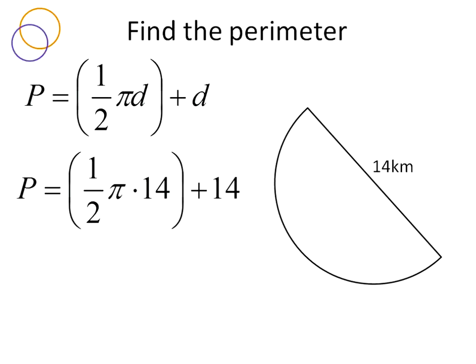The diameter is 14, so we're going to substitute that in everywhere you see d. One half pi times 14 will give us 7π. 14 will remain the same. If you're looking for the exact perimeter, that's it right there, 7π plus 14. That's the exact perimeter. Then we can substitute 3.14 in for pi and find our approximate perimeter,